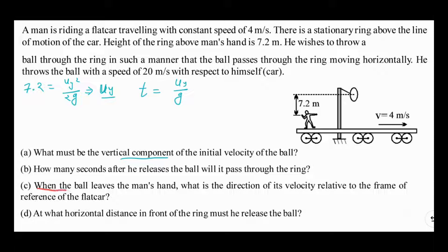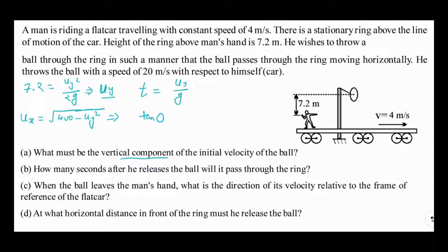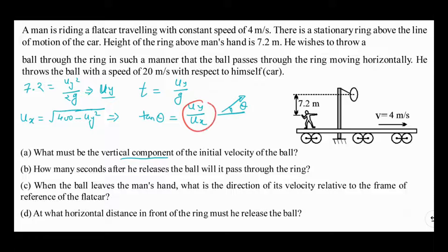In the third part, when the ball leaves the man's hand, we need the direction of its velocity relative to the frame of reference of the flat car. The horizontal component ux can be calculated as ux = √(20² − uy²) = √(400 − uy²). This ux is with respect to the flat car, so tan θ = uy / ux gives the angle θ of the velocity direction with the horizontal, relative to the flat car's frame of reference.